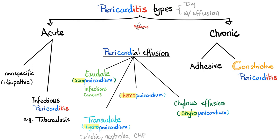Pericarditis types — there are many classifications. You can classify pericarditis into dry versus wet, i.e., with effusion. You can also classify it as acute versus chronic. Acute pericarditis includes the idiopathic nonspecific type and infectious pericarditis — a very important infection is tuberculosis. Viral infections can also lead to pericarditis. Does pericarditis elevate troponin? Usually not, unless it is myopericarditis, where the cardiac involvement includes both the pericardium and the myocardium.